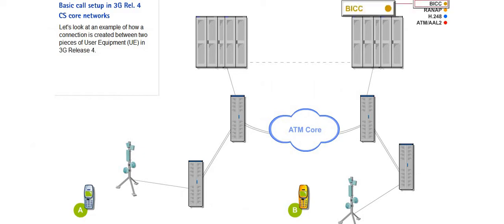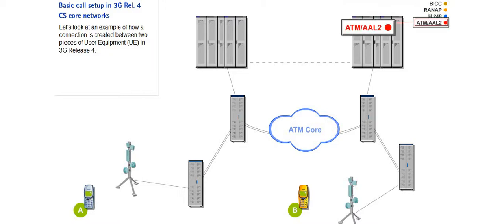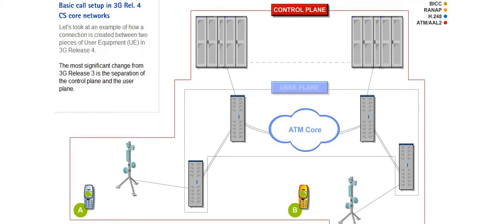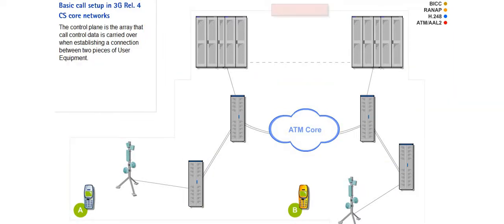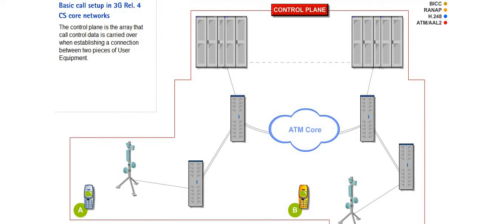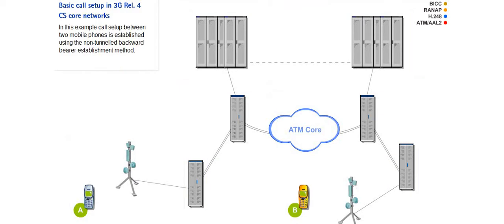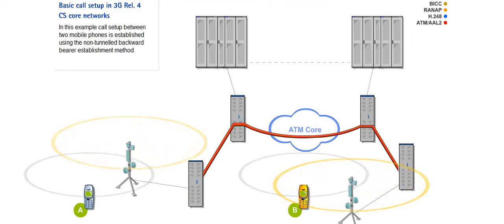Let's look at an example of how a connection is created between two pieces of user equipment, or UE, in 3G Release 4. The most significant change from 3G Release 3 is the separation of the control plane and the user plane. The control plane carries call control data when establishing a connection between two pieces of user equipment. After the connection is established, communication goes through the path set on the user plane. In this example, call setup between two mobile phones is established using the non-tunnelled backward bearer establishment method.